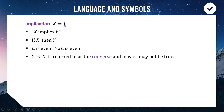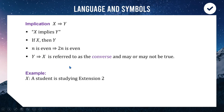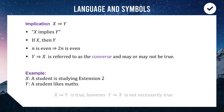If we reverse the direction of the implication — instead of X implies Y, we write Y implies X — we refer to this as the converse statement. Now if we know that X implies Y is true, that doesn't necessarily mean that Y implies X is true; sometimes it will be, sometimes it won't. For example, X is 'a student is studying Extension 2 Mathematics' and Y is 'a student likes maths.' X implies Y is true — if a student is studying Extension 2, they must like maths. However, the converse Y implies X — 'a student likes maths implies they are studying Extension 2' — is not necessarily true. The logic works one way but not necessarily in the other direction.